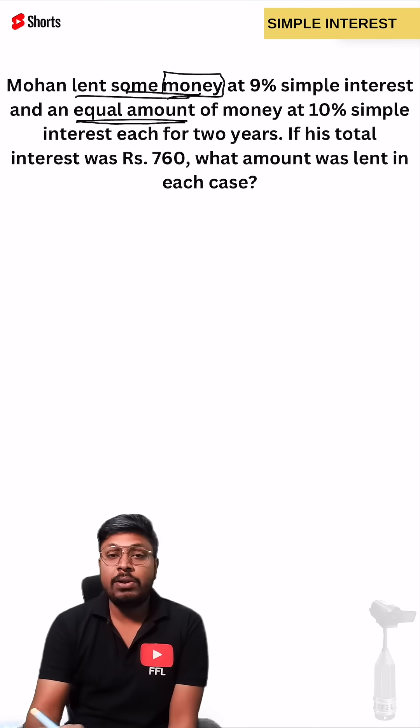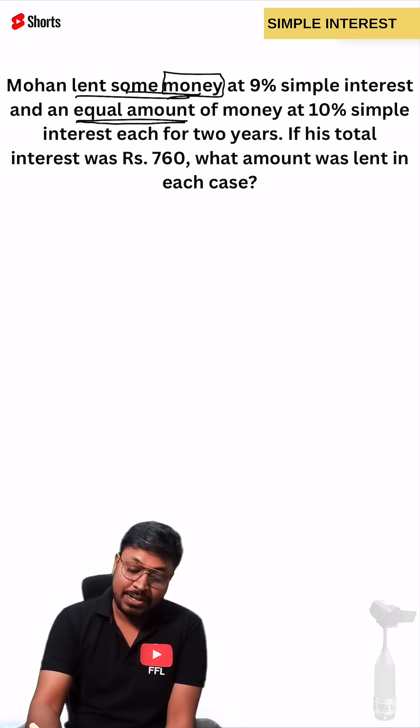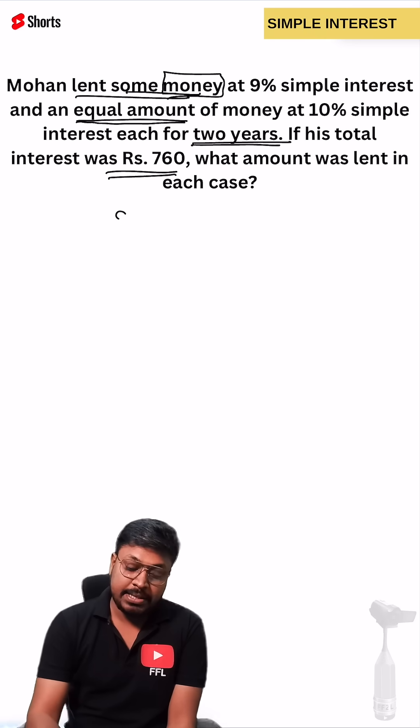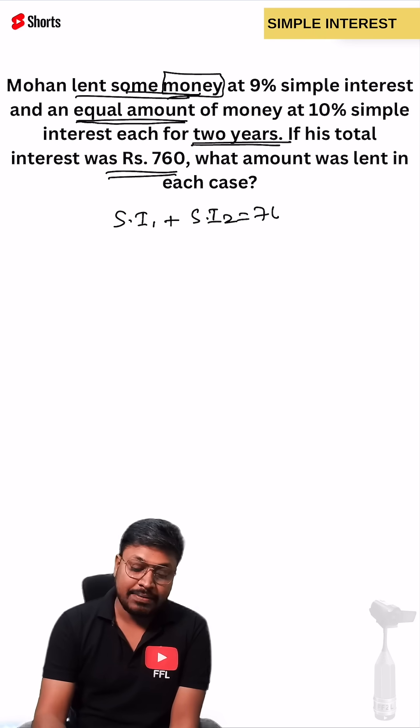We can take the principle common in both the cases. After 2 years, you can see the total interest was 760. That means simple interest 1 plus simple interest 2 equals 760.